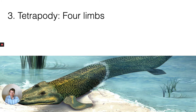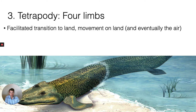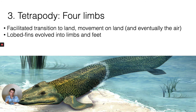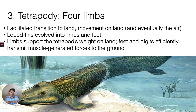The evolution of four limbs — tetrapody — and moving onto land was another really important characteristic in vertebrates in particular. This facilitated the transition to land and eventually to the air. What's thought to have happened is that lobed fins in ancient fishes gave rise to limbs and feet that could support the tetrapod's weight on land. The feet specifically eventually evolved digits to efficiently transmit energy from the muscles to the ground for effective movement. This particular animal in this image is Tiktaalik, a really cool transitional species that was probably one of the first tetrapods — a kind of amphibious organism in the middle ground between water and land.